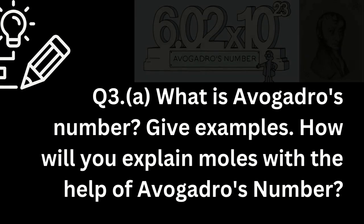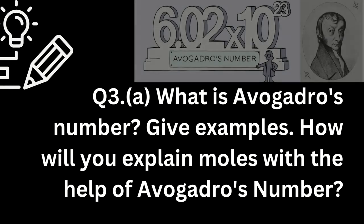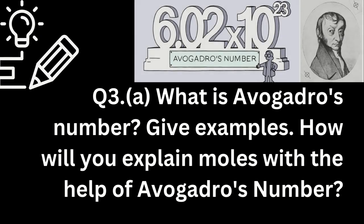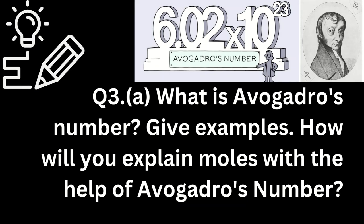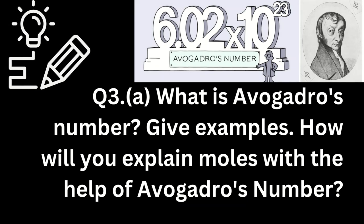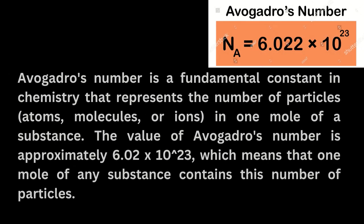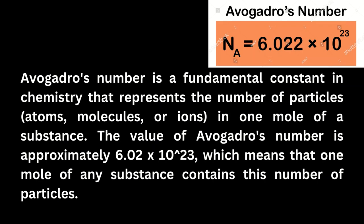Question 3a: What is Avogadro's number? Give examples. How would you explain moles with the help of Avogadro's number? Avogadro's number is a fundamental constant in chemistry that represents the number of particles — atoms, molecules, or ions — in one mole of a substance. The value of Avogadro's number is approximately 6.02 × 10²³.